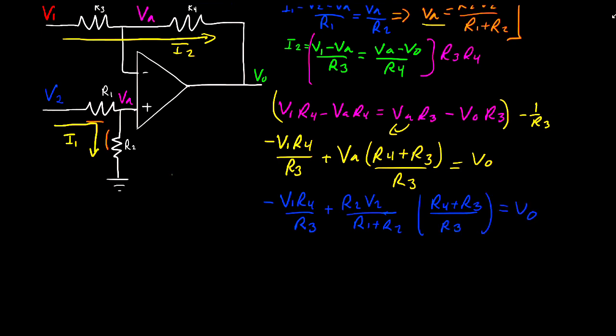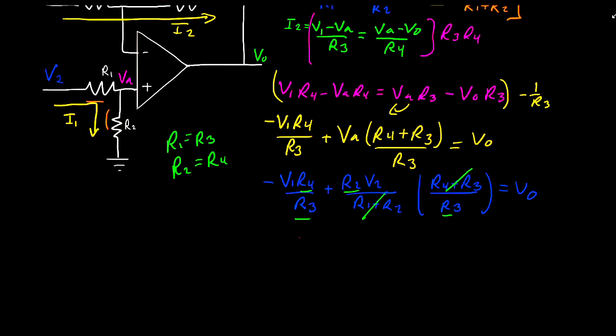Now for this circuit, what's typically done is R1 is set to be equal to R3 and R2 is set to equal R4. So if we do that, something interesting happens. R1 plus R2 cancels with R3 and R4. And these two are the same as these two. So this simplifies down to R4 divided by R3 multiplied by V2 minus V1. And that is going to be equal to VO.